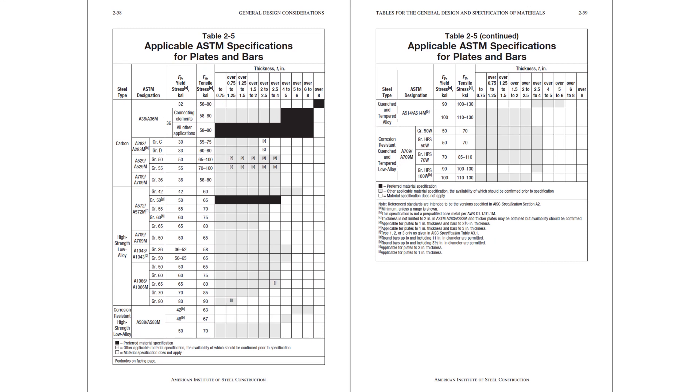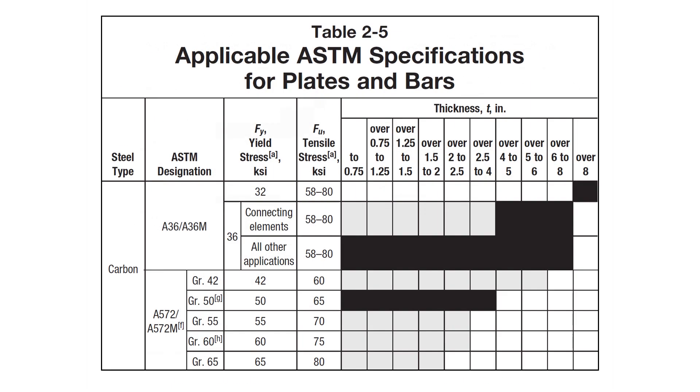As a first step, let's take a look at Table 2-5 from the AISC Steel Construction Manual to determine what the material properties are that we should be using for this evaluation. Zooming in a little bit, you can see that for a plate that has a thickness greater than three quarters of an inch up to and including one and a quarter inches, that the preferred material properties could be either A36 or A572 grade 50. For this problem, we'll assume that the material is A572 grade 50. We'll take the yield stress F sub y equal to 50 ksi and the tensile stress F sub u equal to 65 ksi.